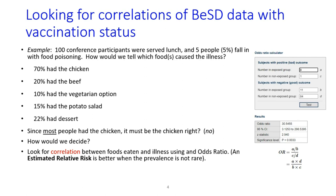What I often see is that countries do not use odds ratios with their BEST data. Instead, they just look at cross-sectional data — what most people said — and make decisions based on the most common problematic response. They feel like they have a good understanding of what's driving something, but when we look for correlations, sometimes we find those are not the things that are actually correlating at all. Doing this additional analysis can really help.